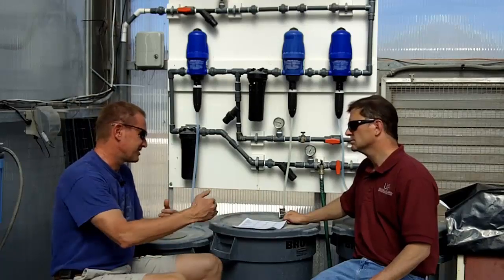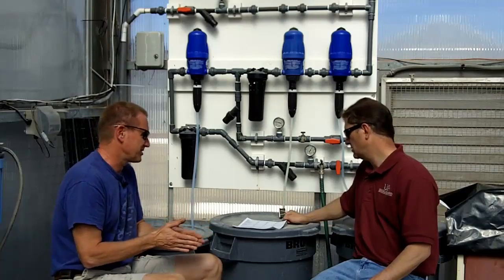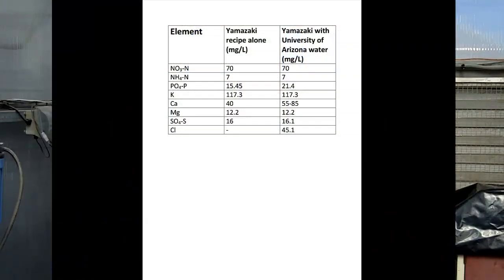And achieving some final calcium concentration. So with our water adjusted a little bit for the Yamazaki recipe, what we finally end up with is we have 70 parts per million of the nitrate form of nitrogen, and we have 7 parts per million of the ammonium form of nitrogen. That gives us that 10 to 1 ratio. That's pretty good overall for strawberry growth. We're looking at 21 and a half parts per million of phosphate, and our potassium is at 117. So not quite a 2 to 1 potassium than nitrogen like in another hydroponic solutions that you might see.